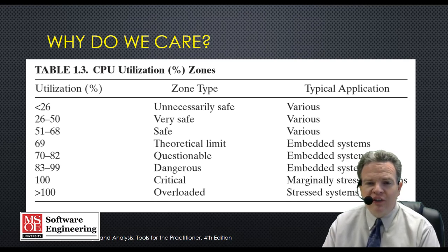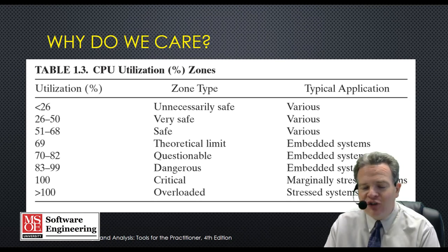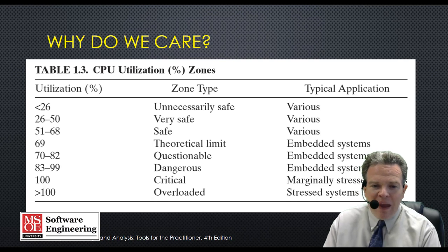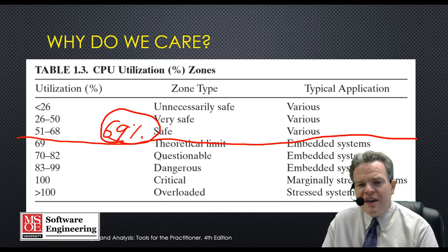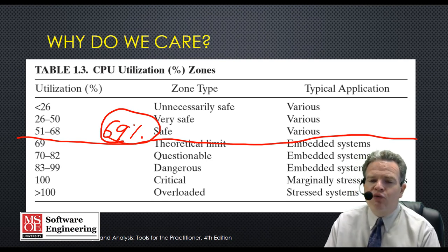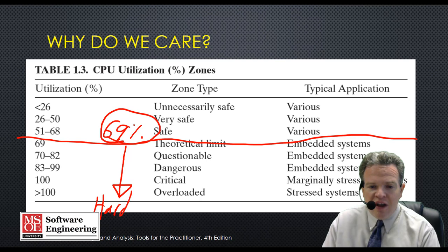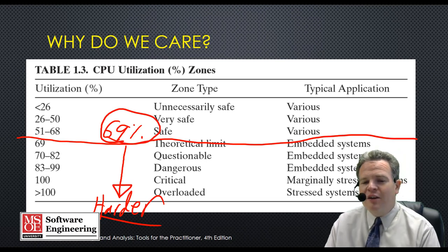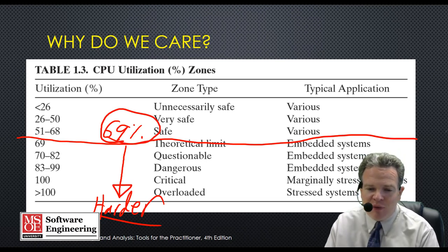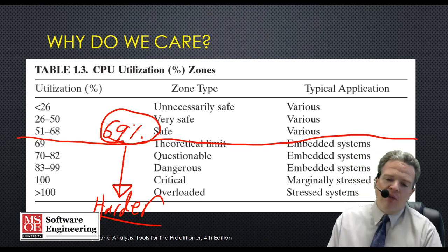Typically what we can use is CPU utilization zones, and there is some deep theory to this that we'll talk about when we get into rate monotonic analysis about the schedulability of systems. Basically what we say is if we get up to about 69%, we can be pretty safe without having to do a tremendous amount of analysis. But as we go beyond that it gets harder, and there is theory behind this that justifies these values based on the priority of the tasks and how they intermix.